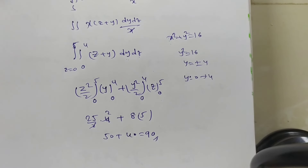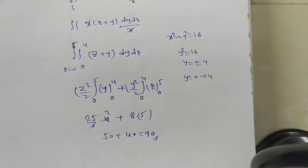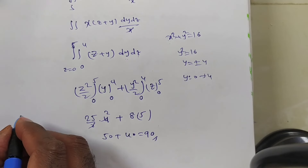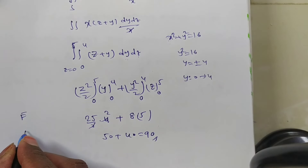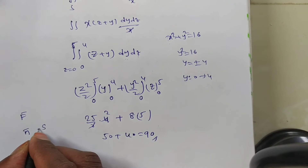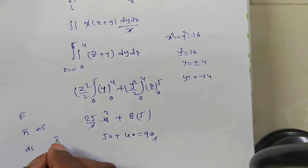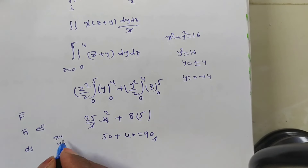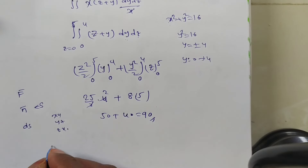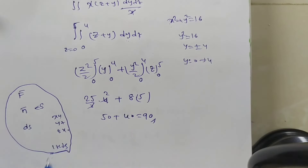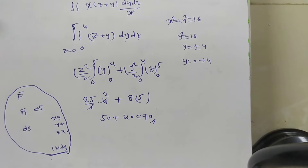The answer is 90. To summarize: given f̄, find n̄ for the given surface, determine ds by choosing the correct projection plane (xy, yz, or zx), find the limits, and evaluate the surface integral. Thank you for watching.